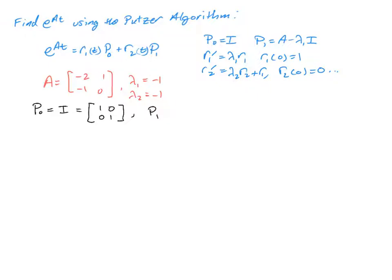The matrix P1, well, that's found by going through and taking the matrix A. If I can get the right matrix there... And going through and subtracting the eigenvalue times the identity matrix. And we saw in the previous video, this is the same thing as a negative 1, 1, negative 1, 1 matrix. And in the event that we need to find a P2, that's just A minus lambda 1i times A minus lambda 2i.